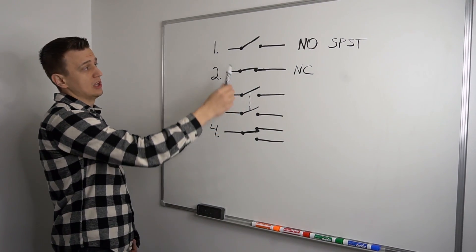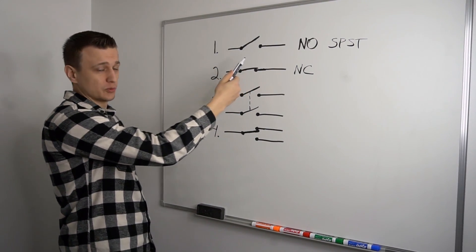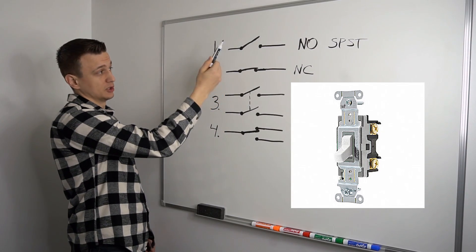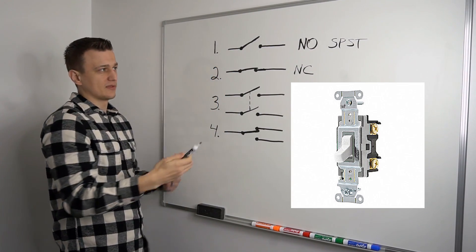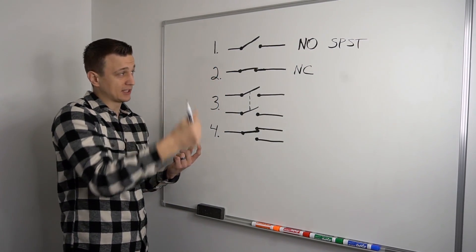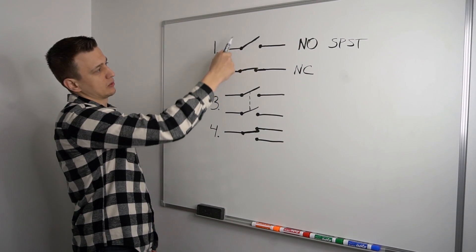So for example, this open switch right here, this could be like a light switch. If your lights are off, the switch would be open. Or like on a furnace power switch, if you flip that switch off, this is what that would look like.